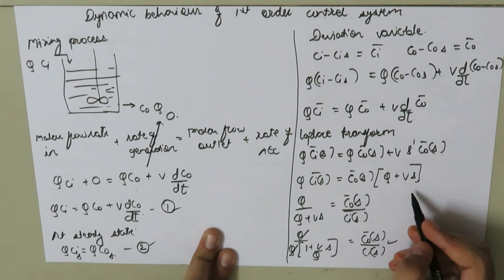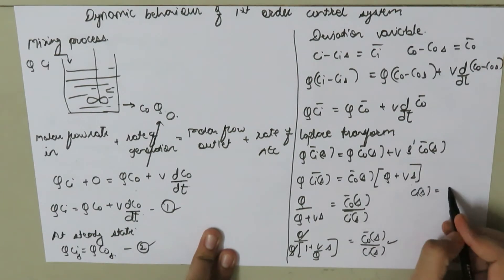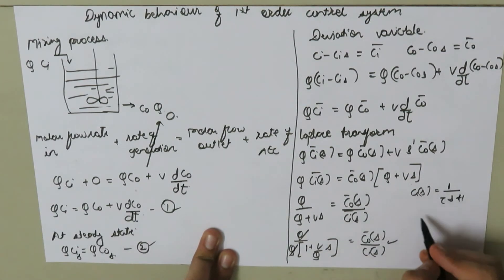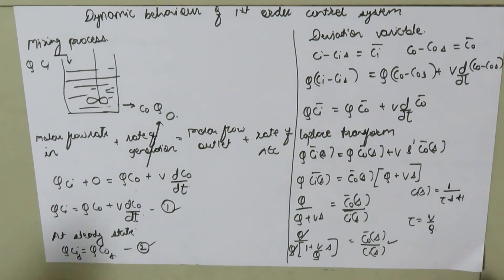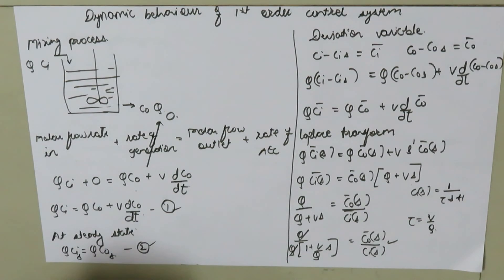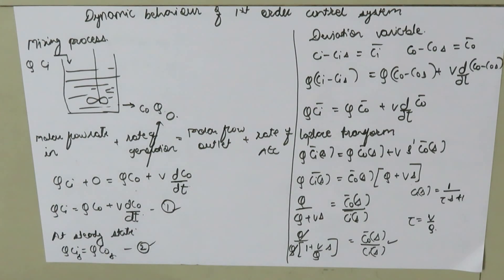Comparing this with the standard first-order transfer function G(s) equals 1 divided by (τs + 1), it is clear that the time constant τ equals V/Q. So for a mixing process, the time constant is the ratio of the tank volume to the volumetric flow rate. This concludes the dynamic behavior of a first-order control system using the example of a mixing process.